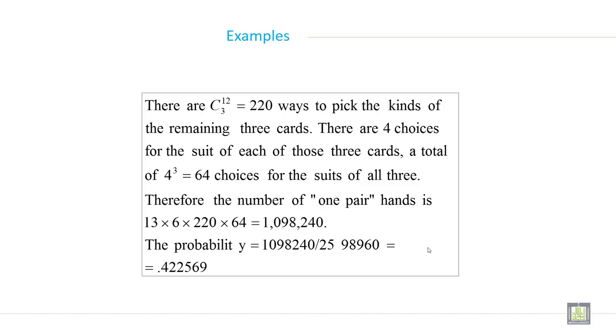There are C₃¹² equals 220 ways to pick the kind of the remaining 3 cards. There are 4 choices of the suite of each of those 3 cards. A total of 4 to the power cube, 64 choices for the suite of all 3s.